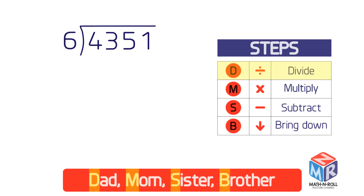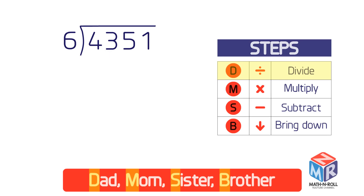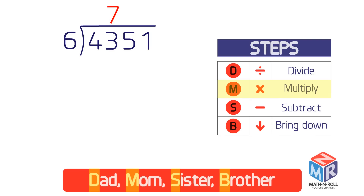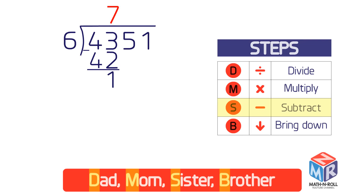Group the 4 and the 3 together. Now ask how many times 6 goes into 43 — that is, what's 43 divided by 6? The answer is 7 with a little left over, so write 7 directly above the 3. Multiply 6 by 7 to get 42. Place the product directly below the 43, draw a line beneath it, and subtract 42 from 43 to get 1. The result is less than the divisor, so it's okay.